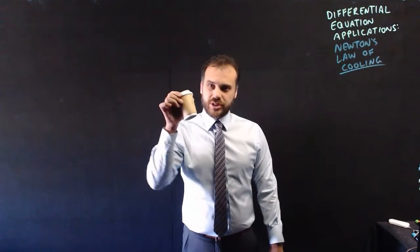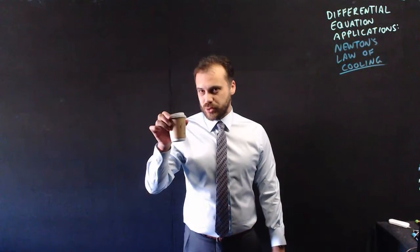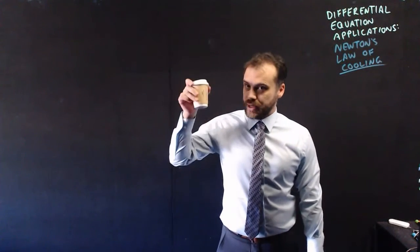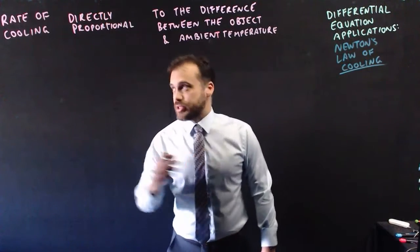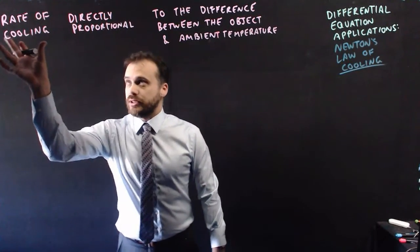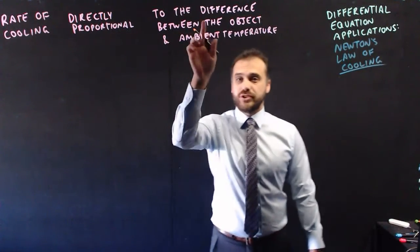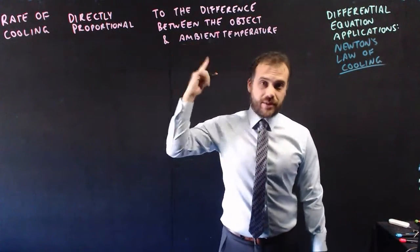So Newton said that the rate at which this cools is directly proportional to the difference between this temperature and the temperature around us. I'll repeat that with the words to help. The rate of cooling is directly proportional to the difference between the object, the coffee, and the ambient temperature.